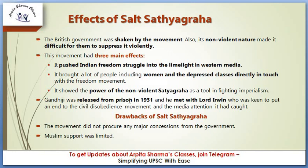Gandhiji was released from prison in 1931 and met with Lord Irwin as a result of the civil disobedience movement and the media attention it had caught. As a drawback of the salt satyagraha, the movement did not procure any major concession from the government, and Muslim support was limited — unlike in the non-cooperation movement where the Muslim League was very supportive.